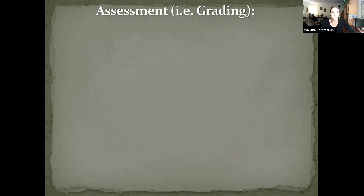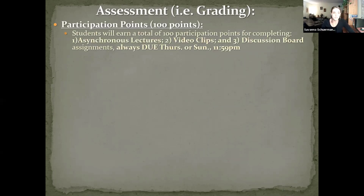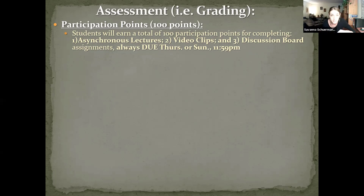Your grade is going to be based off five main things. The first is participation points, worth 100 points of your final grade — 600 points possible total. When you complete asynchronous activities like asynchronous lectures, video clips, and discussion board assignments, you'll earn participation points for answering questions or sometimes just for confirming that you watched the lecture. It's largely on the honor system — it's to encourage you to cover the material, so I'll give you points for completing it.